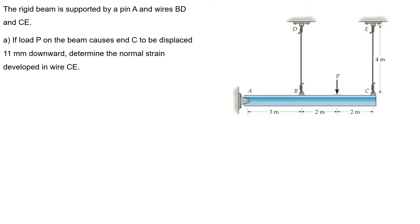Hello guys, this is the first problem of homework 5 — the rigid beam supported by a pin A and wires B, D, and C. Letter A: if load B on the beam causes end C to be displaced 11 mm downward, determine the normal strain developed in wire C, E.